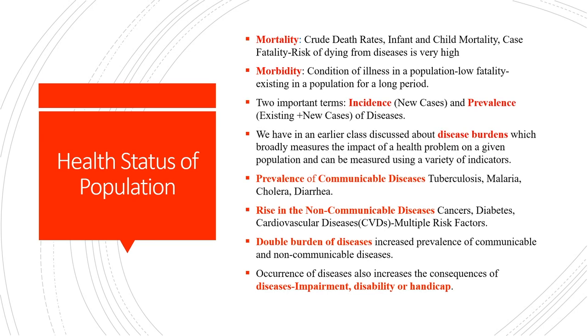With regard to morbidity, there are two important terms: incidence and prevalence. Incidence refers to new cases of diseases and prevalence refers to existing plus new cases. The indicator 'prevalence of morbidity' provides us a comprehensive view of morbidity status within a population and is widely calculated at the state level and at the unit level to provide a household-level scenario of morbidity status. NSSO does not provide district level data but provides unit level and household level data at the NSS regions.